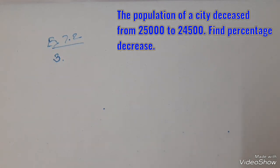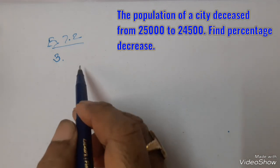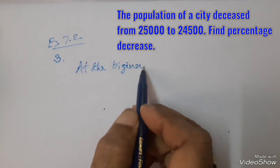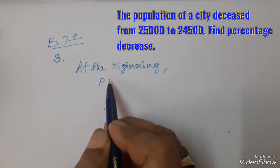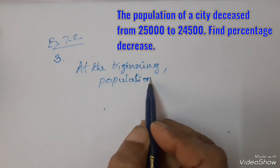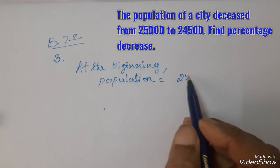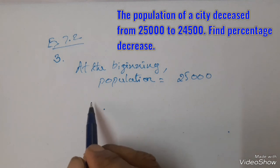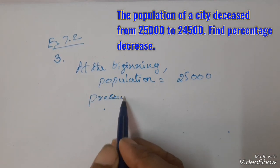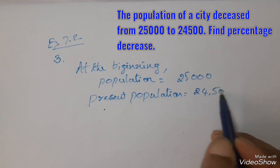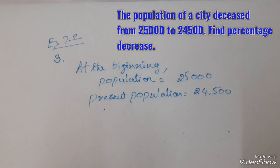Exercise 7.2, third problem. The population of a city decreased from 25,000 to 24,500. At the beginning, population is 25,000. After decreasing, the present population is 24,500. The question is: what is the percentage of decrease?